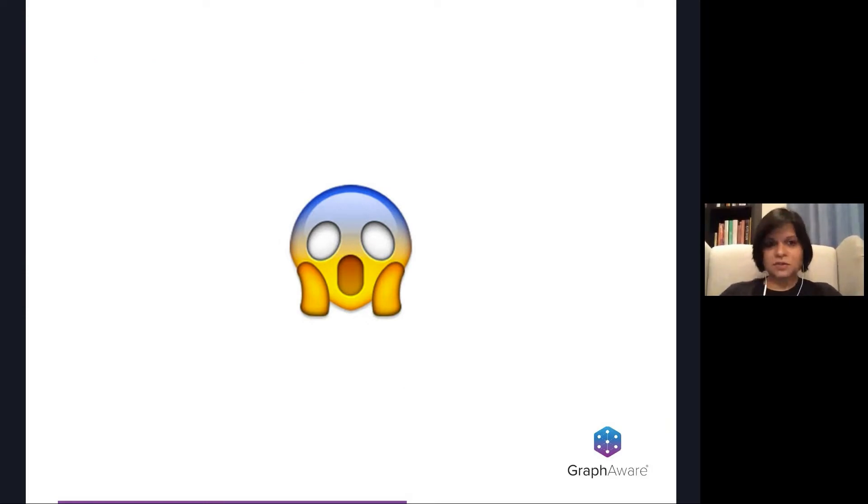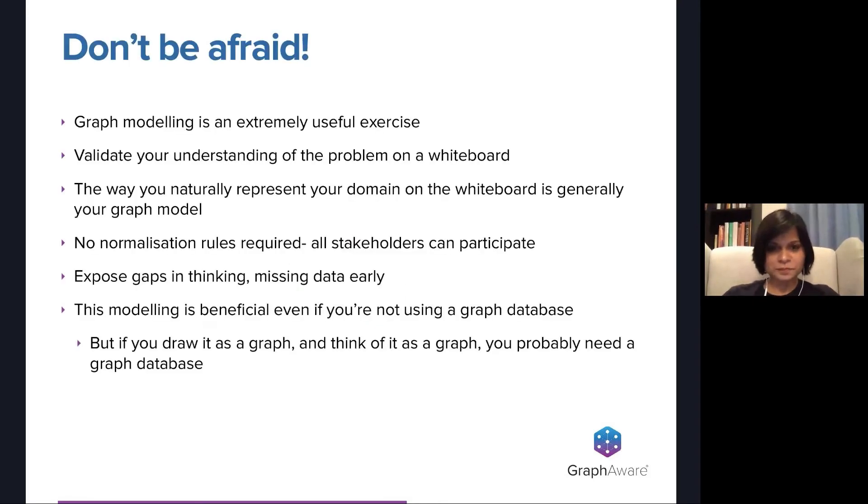And the fourth person could decide to treat the role as a first class citizen of the graph and pull that out as its own node. Maybe this model is better. Maybe it looks more complex and certainly more colorful, but is it actually useful? We don't actually know this. And so at this point, a lot of new graph modelers are terrified because there are so many ways to build a graph model and no one can even tell you at this point whether it's good or not. But really, there's nothing to be afraid of.